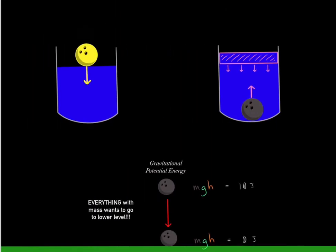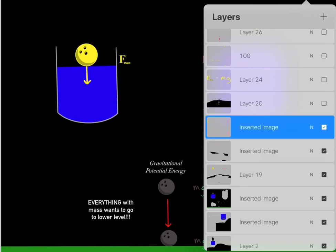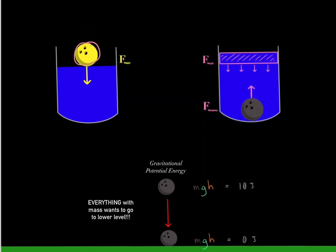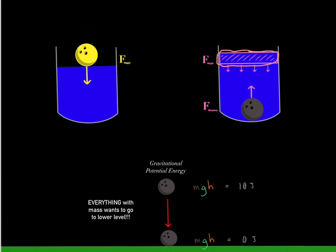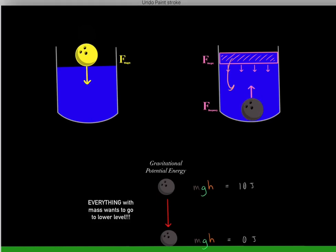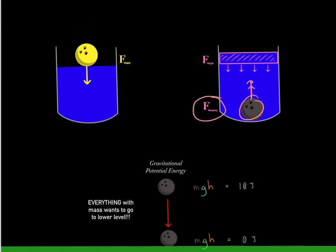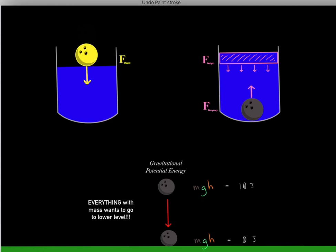All objects with mass want to fall to a lower level. This bowling ball has mass, so it wants to fall to a lower level. But this displaced water also has mass, so it also wants to fall to a lower level. When this displaced water applies its force going downward, it lifts this bowling ball upward. So this force that's lifting the bowling ball upward is called the buoyant force — it comes from this water wanting to fall down.